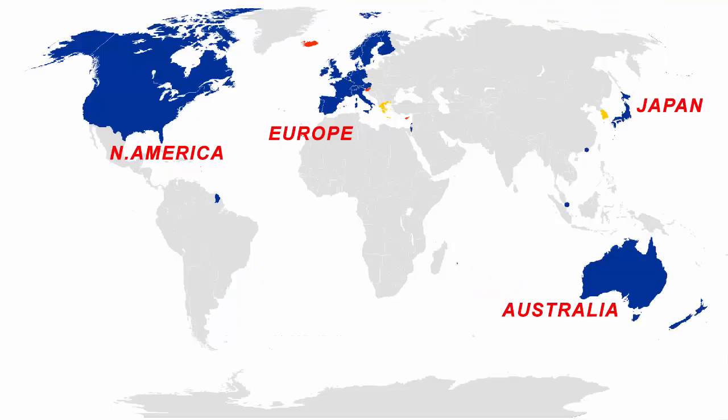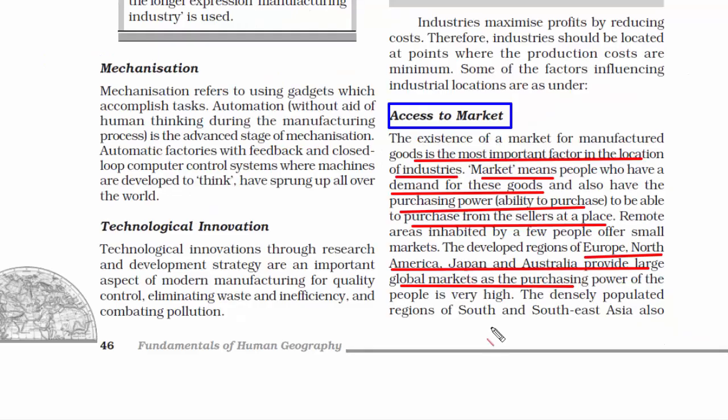If you look at the world map, the regions of Europe, North America, Japan, and Australia are the global markets where demand and purchasing power is very high. If we speak about Asia, India and China form a large market purely because of their huge population.